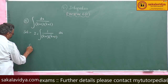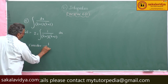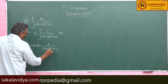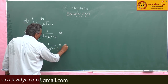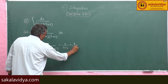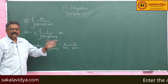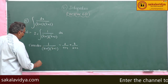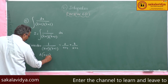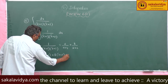Consider 1 by (x+1)(x+2) is equal to A by (x+1) plus B by (x+2). Multiply (x+1)(x+2) on both sides; we get A(x+2) plus B(x+1) is equal to 1.